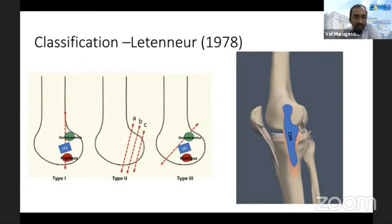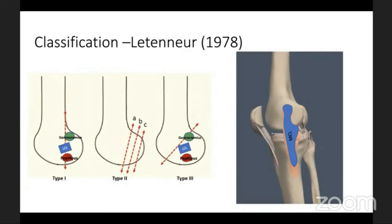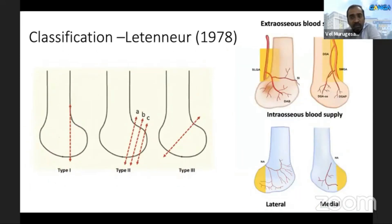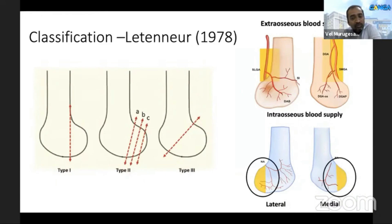On the medial side, the MCL attaches to the medial epicondyle with a broad tibial attachment. In type 1 and type 3 fractures, the condylar segment has good soft tissue attachment, but in type 2 fractures the soft tissue attachments are absent — they are purely articular fractures. Regarding blood supply, the main supply is from the extra-osseous superior lateral and medial geniculate arteries and descending geniculate arteries. The nutrient arteries are deficient in supplying the posterior condyle, making type 2 fractures more prone to avascular necrosis.